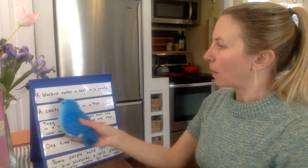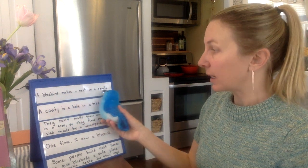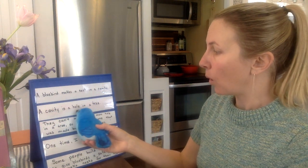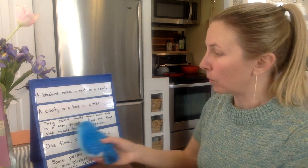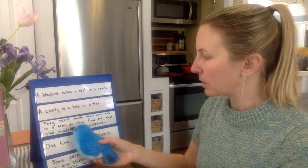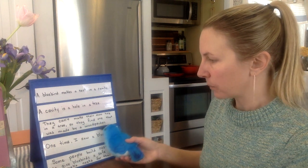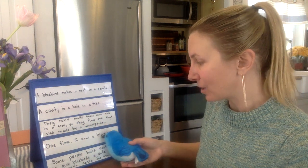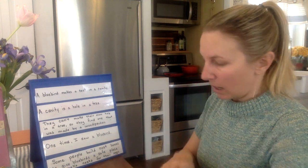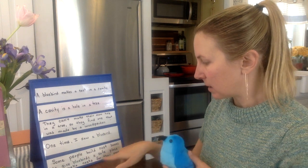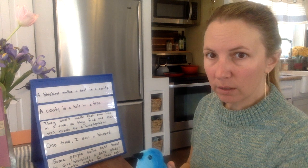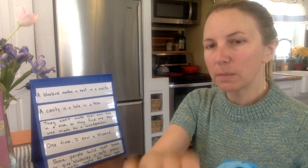A bluebird makes a nest in a cavity. A cavity is a hole in a tree. They can't make their own hole in a tree, so they find one that was made by a woodpecker. One time I saw a bluebird. Some people build nest boxes to give bluebirds a safe place to make nests for their eggs. Today it's just a little bit trickier to figure out — is this about nests or is it not about nests? Because every sentence doesn't have the word nest in it.